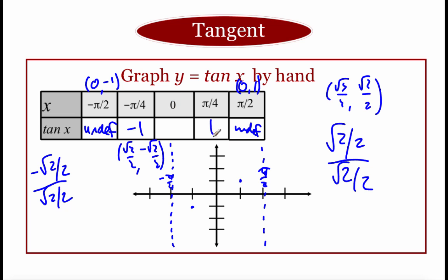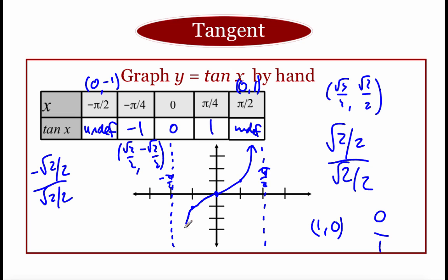At 0, the ordered pair is (1, 0), so the fraction is 0 over 1, which gives us 0 — we put a dot there. Now I'll make the curve: starting at 0 going right to hit the point at pi over 4, then the asymptote makes the graph go almost straight up. Starting at 0 going left to hit the point at negative pi over 4, then the asymptote makes the graph go almost straight down. That's one cycle of the tangent graph.